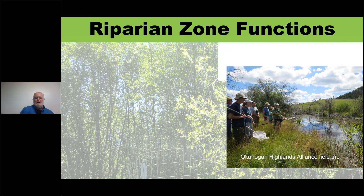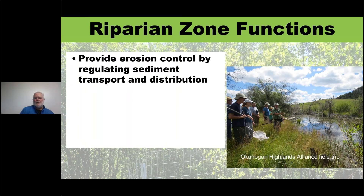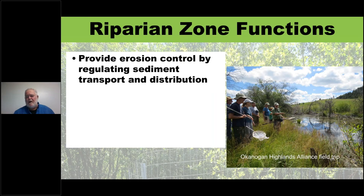Riparian zone functions include erosion control by regulating sediment transport and distribution — a big one. Sediment transport is huge with stream systems, and treatments that block it will blow out because sediment has to go somewhere. If you don't understand how streams move sediment and where it comes from, talk to a hydrologist to get a thorough understanding of sediment transport.